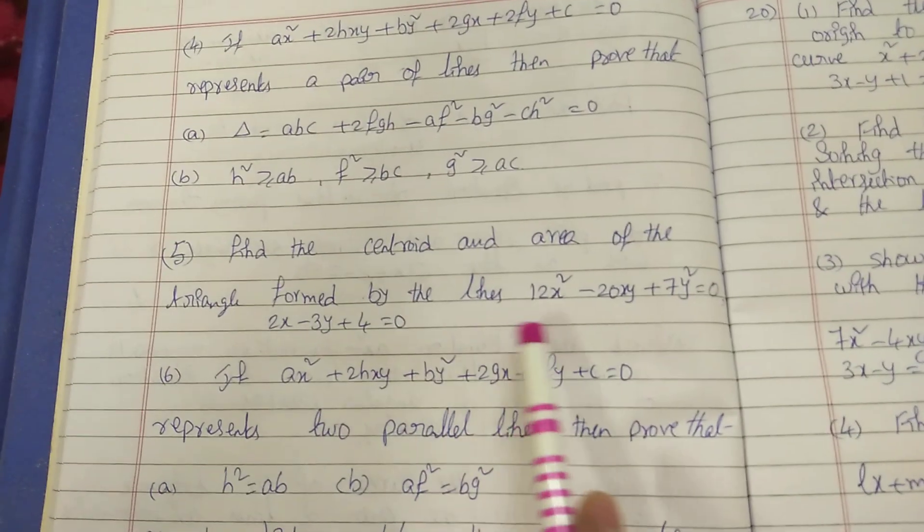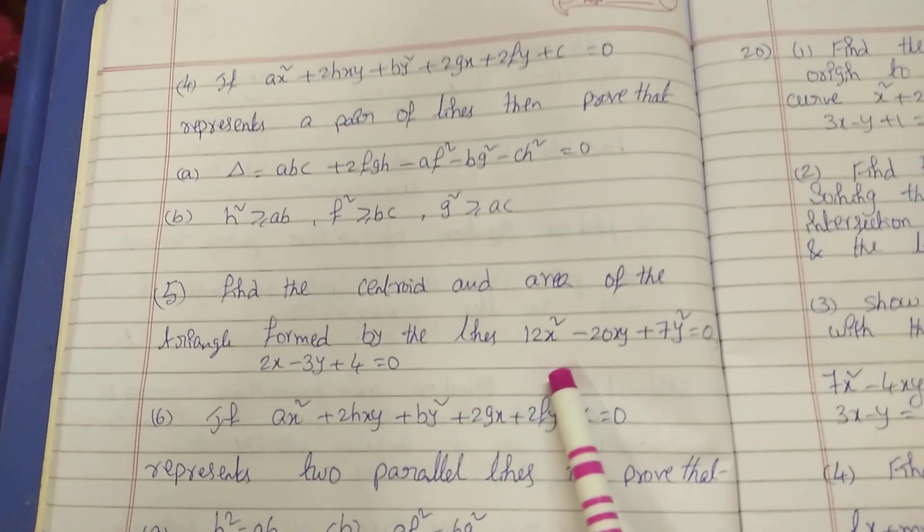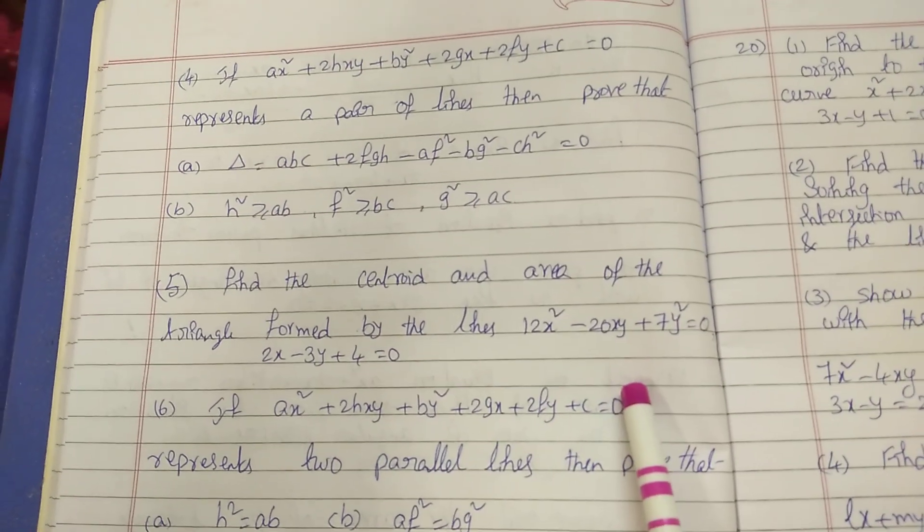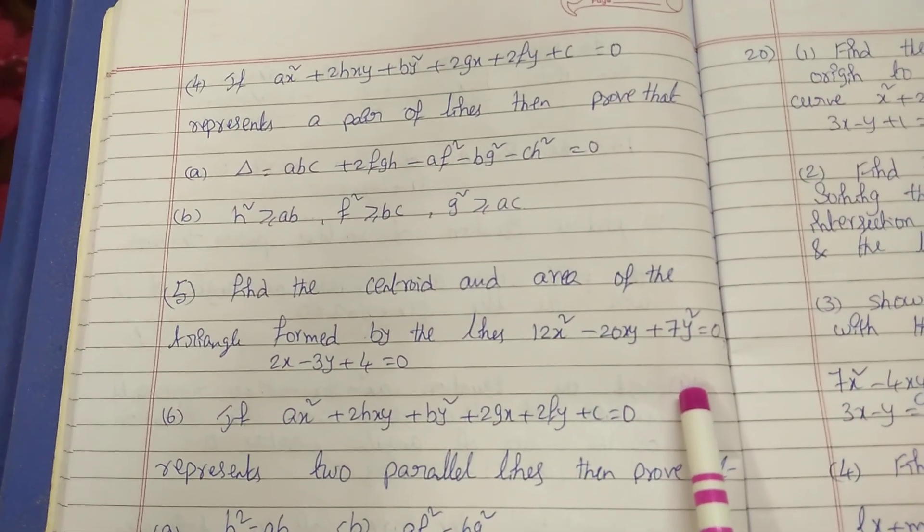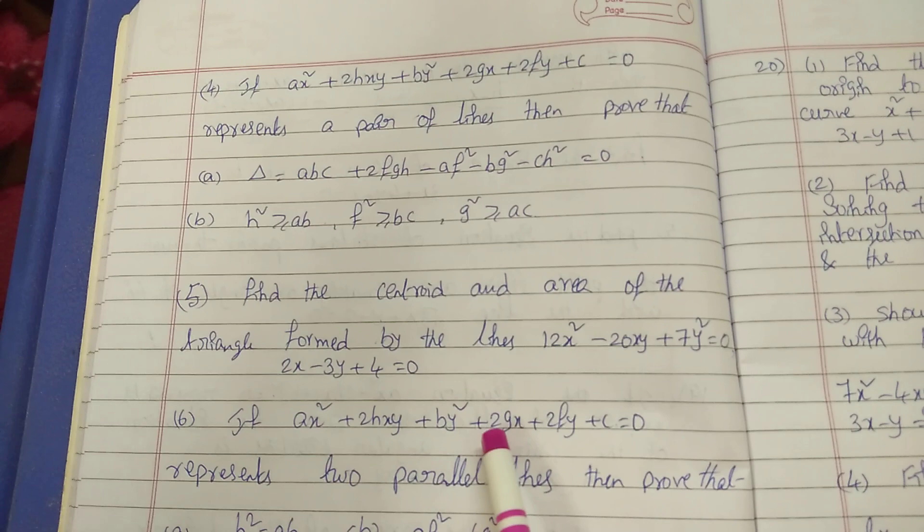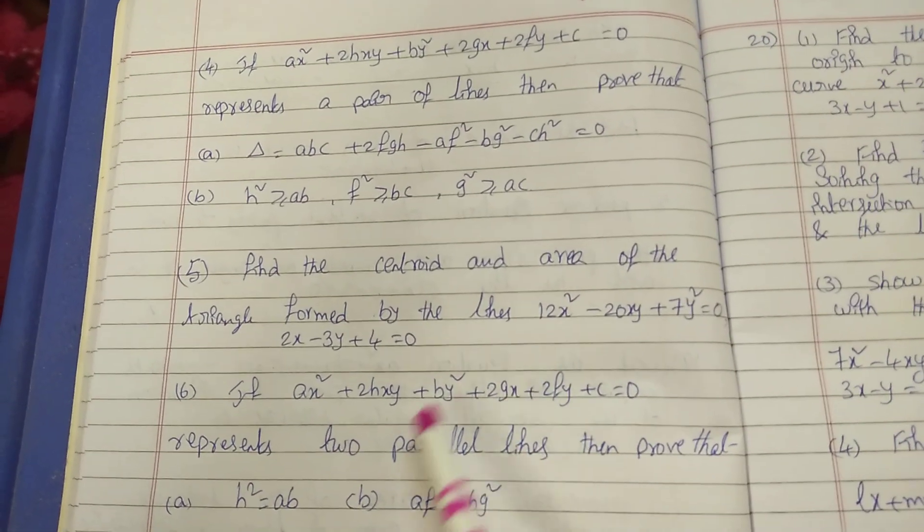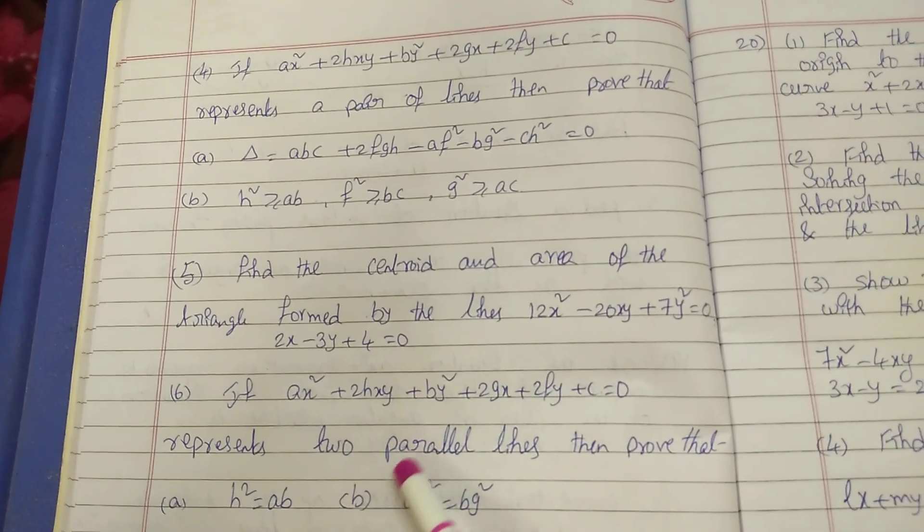Fifth one: find the centroid and area of the triangle formed by the lines 12X square minus 20XY plus 7Y square equal to 0, 2X minus 3Y plus 4 equal to 0. This is important. Next, in these, 2 bits. Next, parallel lines.